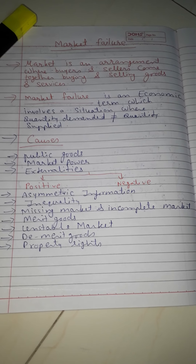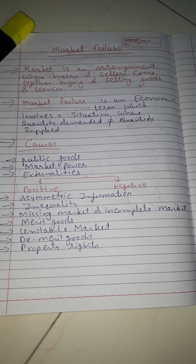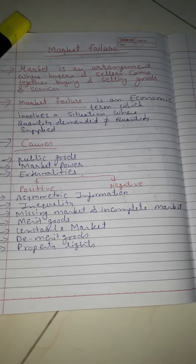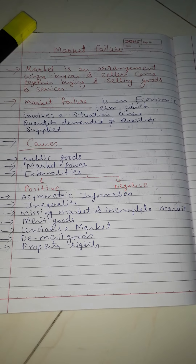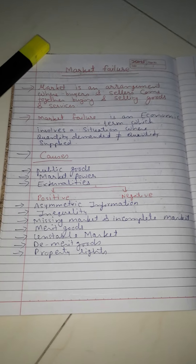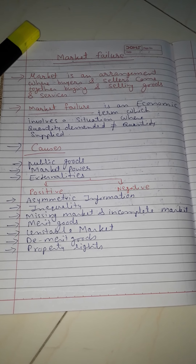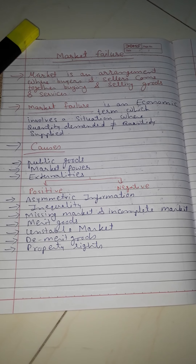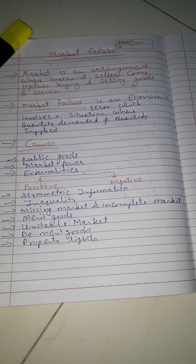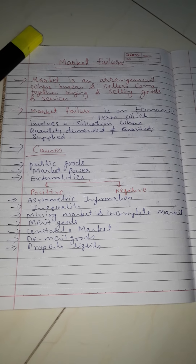The second cause is market power. Market power is possible whenever an imperfect competitive market takes place. Imperfect competitive markets include monopoly, monopsony, oligopoly, oligopsony, etc. In market power, the firm has the power to change the price, make price discrimination, and make demand and supply unequal.